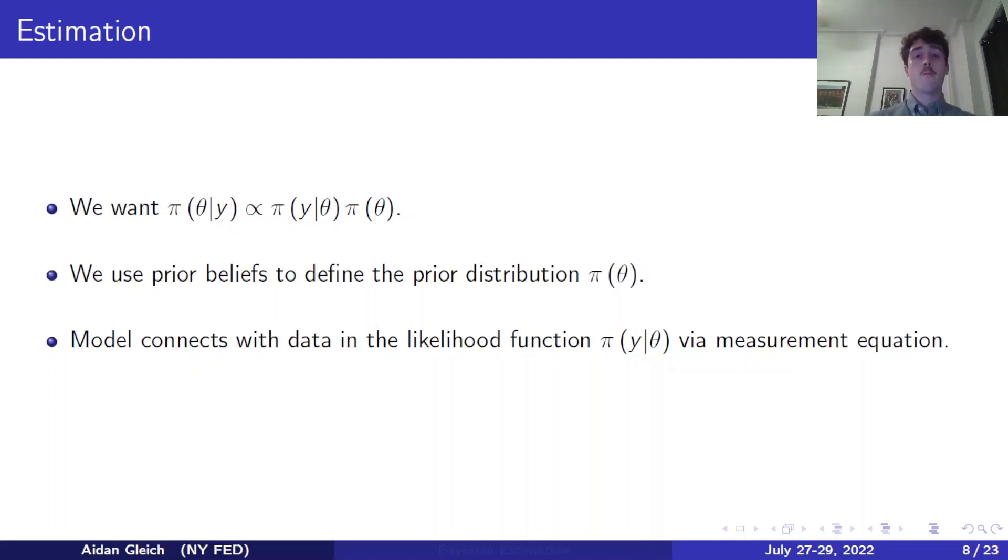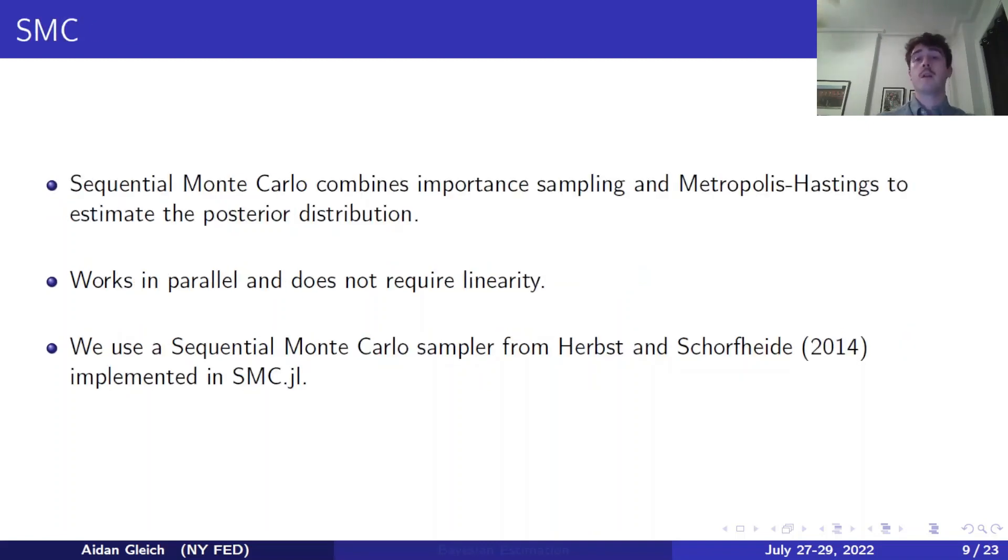And that likelihood function is using the measurement equation from the previous slides, among other things. And you can see here that I've written the posterior distribution as a function of, or as proportional to, the prior times the likelihood. If we wanted to get equality there, of course, using Bayes' rule, we would need to divide by the marginal distribution of the data. But the marginal distribution of the data is impossible analytically to calculate, or at least it's very, very hard. So, we use proportionality and then an estimation algorithm, such as sequential Monte Carlo, to estimate the posterior distribution. So, on the DSGE team at the Fed, we primarily use SMC as our estimation algorithm.